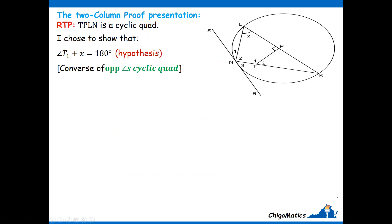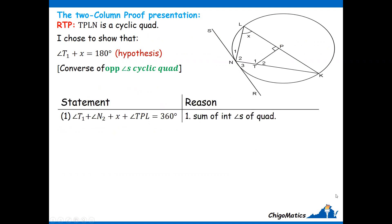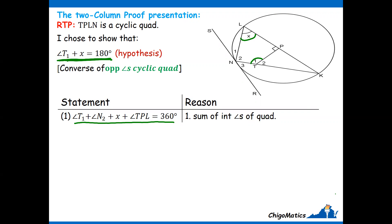So let us look at the two-column proof presentation — you write the statement and the reason. You should be guided by where you want to arrive. I want to show angle T1 plus angle X equals 180, so that is an equation. Wherever I start, I need to form an equation that includes T1 and X being added together. I need to think of how to formulate an equation involving both T1 and X. Since we have quadrilateral LNTP, the sum of interior angles equals 360 degrees — so I added them to give 360, and from there I will work with what I have. But this is not the only approach — there are many ways to start.